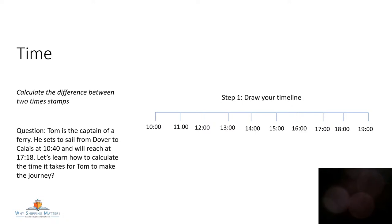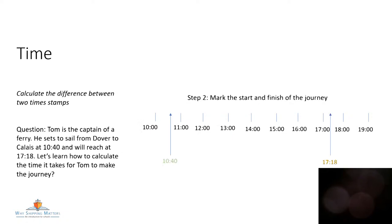The first thing we're going to learn about is calculating journey times. Here's our first question. Tom is the captain of a ferry. He set sail from Dover to Calais at 10:40 and he'll reach Calais at 17:18. So let's learn how to calculate the time it takes for Captain Tom to make his journey. The first step is to draw our timeline. Then the next step is to mark on the timeline the start and finish of the journey. We set off at 10:40 and we're arriving at 17:18.